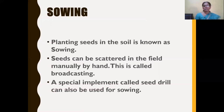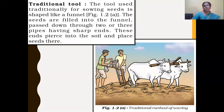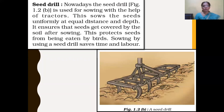The second method of sowing is by using a special implement called a seed drill. We have seen two types: traditional seed drill and modern seed drill. The traditional seed drill consists of a funnel-shaped structure where seeds are filled. The seeds pass through two or three pipes with sharp ends, which pierce into the soil so that seeds are placed deeply.